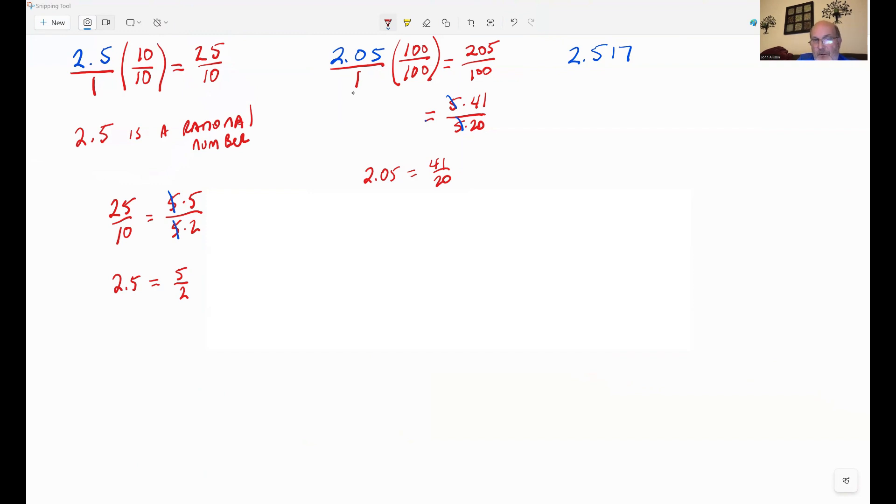And there again, if you want to ever reduce a fraction, you do that. You hit math, enter twice. Still 41 over 20, which tells you that can't reduce any more.